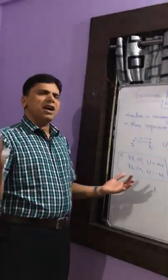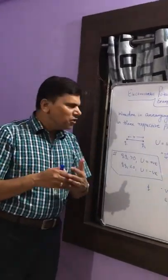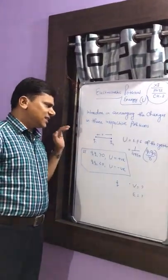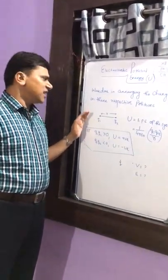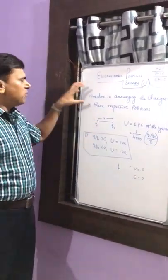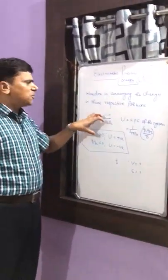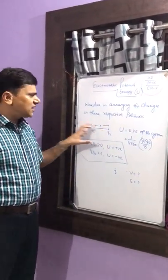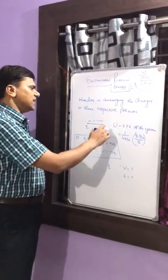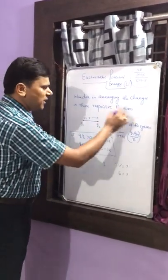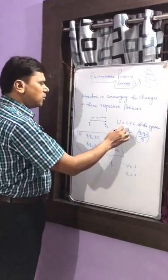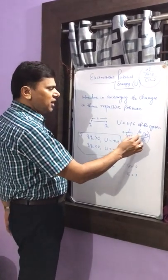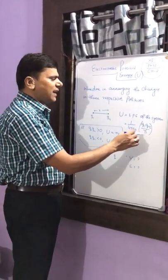Whatever work we do in arranging these two charges in their respective positions becomes the potential energy of the system. So for this system, the potential energy equals 1 over 4π ε₀ times Q1 Q2 over R.